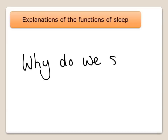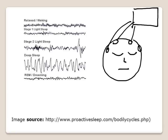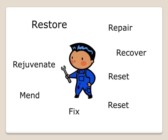Explanations of the functions of sleep attempt to answer the question: why do we sleep and what is its purpose? Restoration theories focus on the physiological aspects of sleep — the pattern of neural and bodily activity which occurs while we are sleeping. The common ground for any restoration account is an assumption that sleep is for physiological repair.